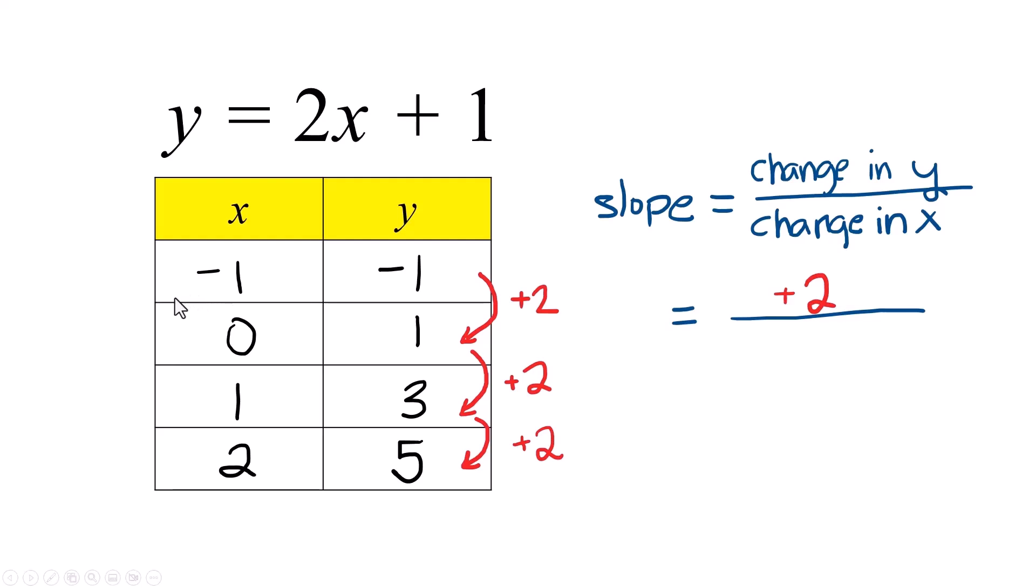Find the change in x. Now, I picked these numbers on purpose to go up by 1's. That just makes this part easier. So 1. So our slope of the line is 2. Where does the 2 show up in this equation? It's right here.